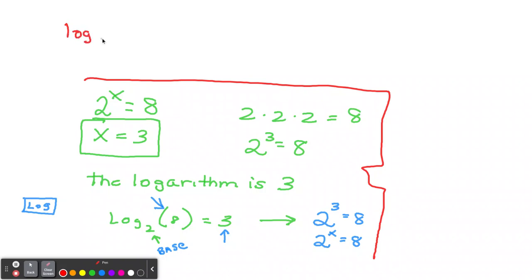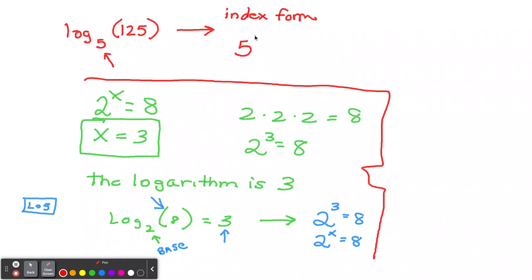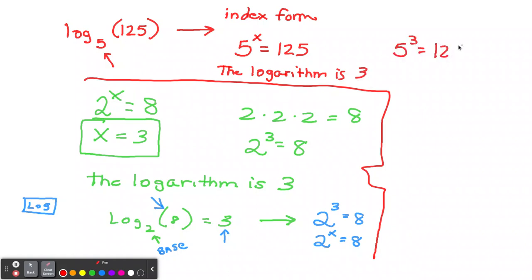If you saw log subscript 5 of 125, how would you put that in index form? The subscript 5 is the base, so it's going to have a 5. We put an x because we don't know the power, and it equals 125. The logarithm is 3, because 5 to the third power — 5 cubed — is 125. Five times 5 times 5 is 125.